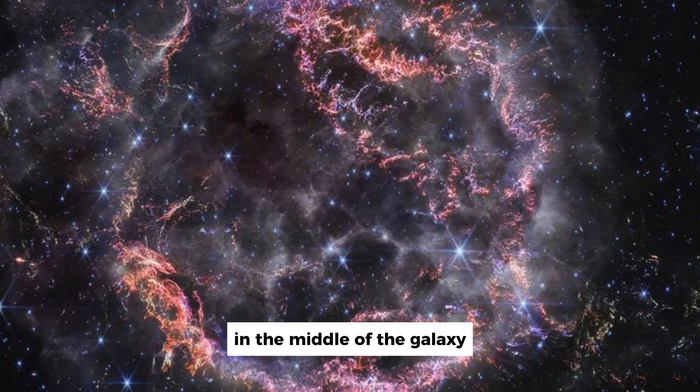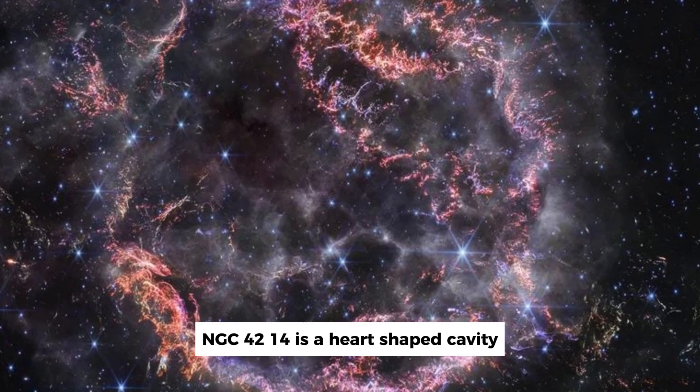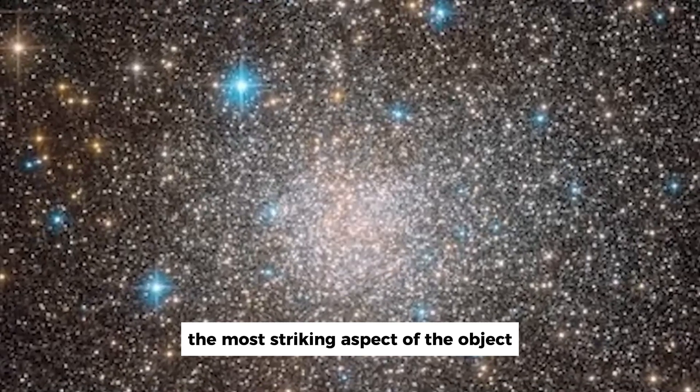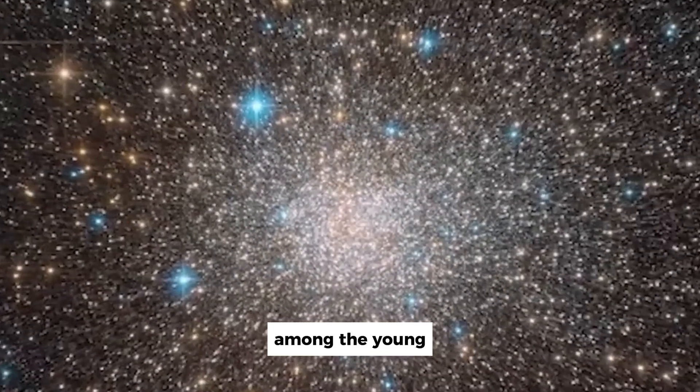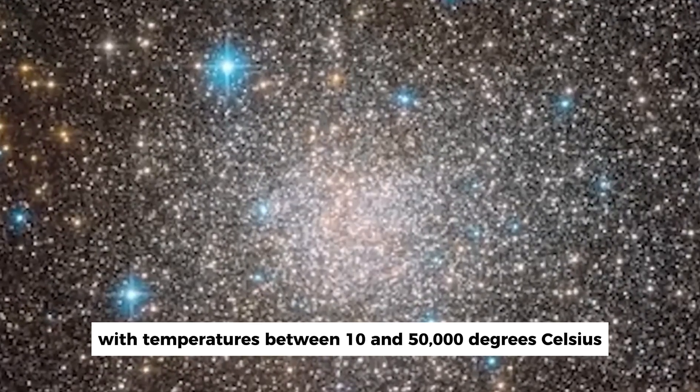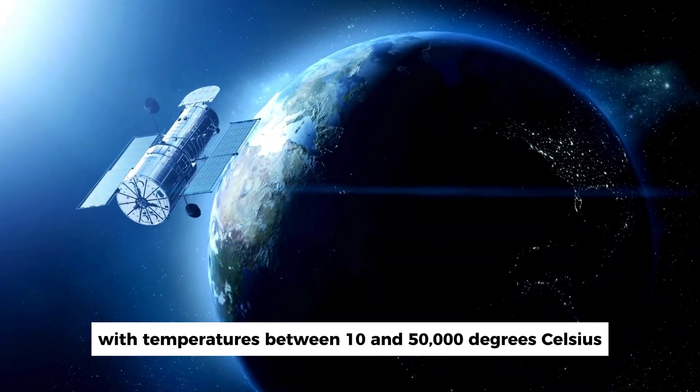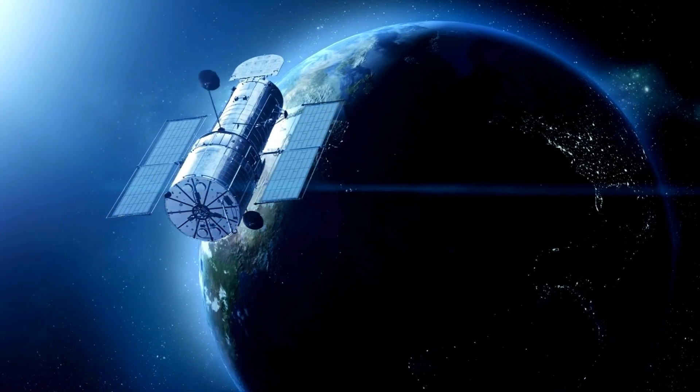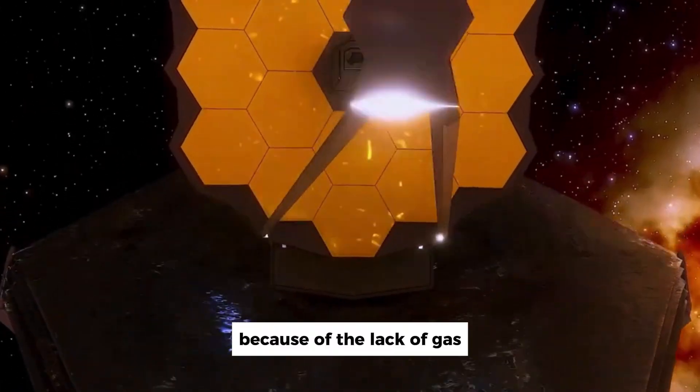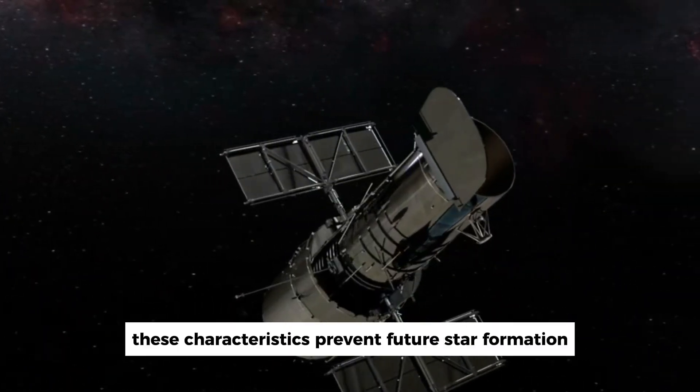In the middle of the galaxy, NGC 4214 is a heart-shaped cavity, which is probably the most striking aspect of the object. Among the young massive stars contained within this void are several with temperatures between 10 and 50,000 degrees Celsius. The bubble was caused by the stellar winds from these objects. Because of the lack of gas, these characteristics prevent future star formation.